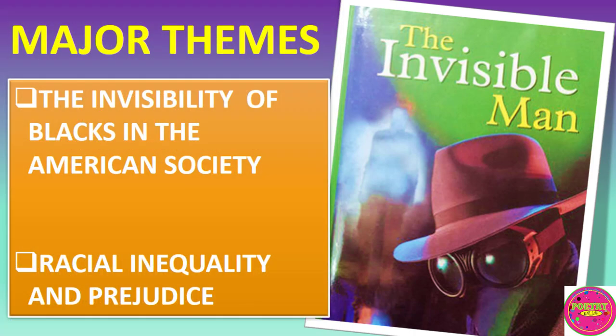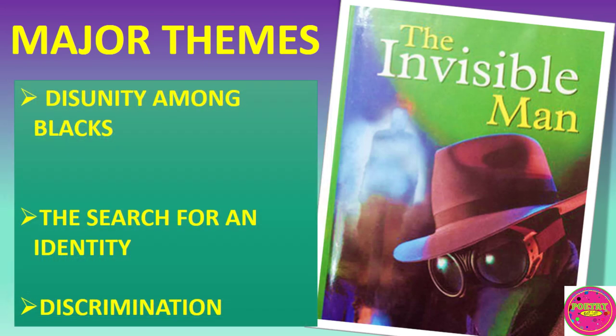The major themes of this novel include the invisibility of blacks in American society, racial inequality and prejudice in the United States, disunity among blacks, the search for identity, and discrimination.